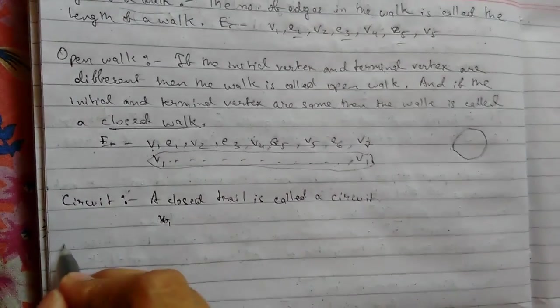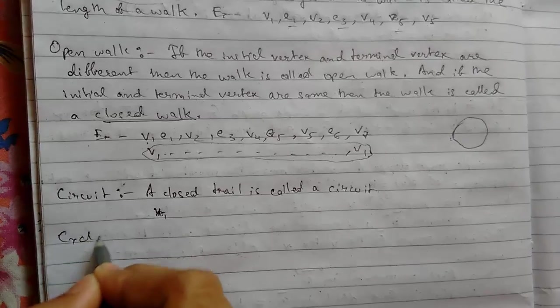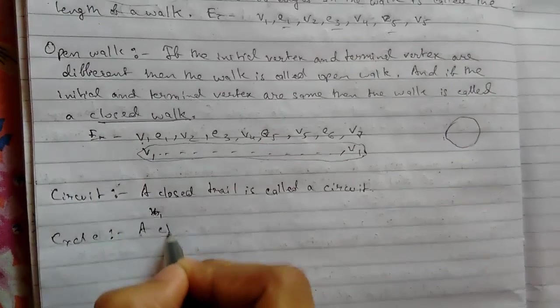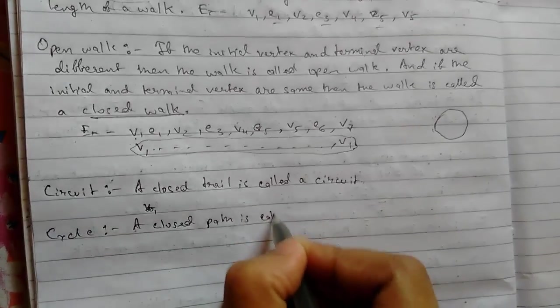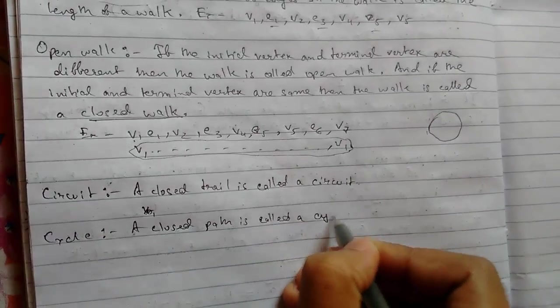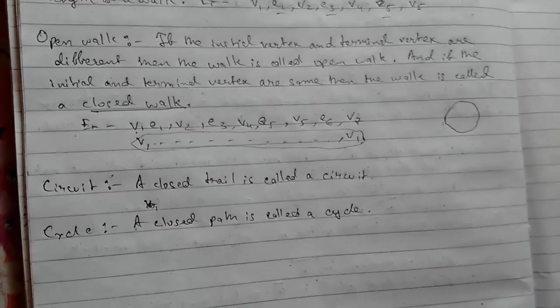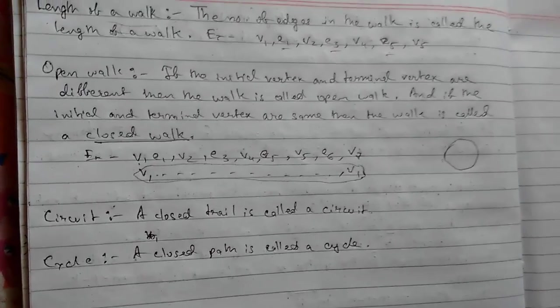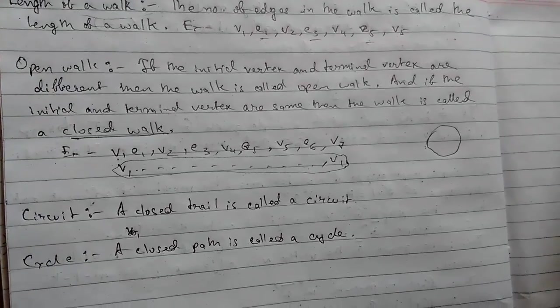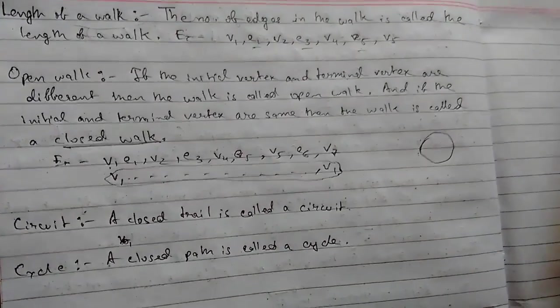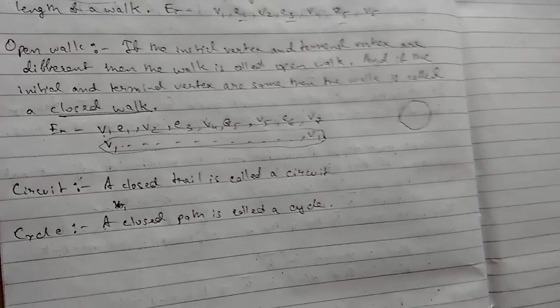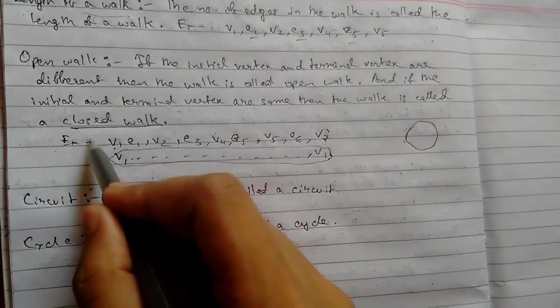And cycle: a closed path is called a cycle. So for a cycle, we know the definition of cycle is a closed path is called a cycle. And we know what a path is: a path is no repetition of vertices.